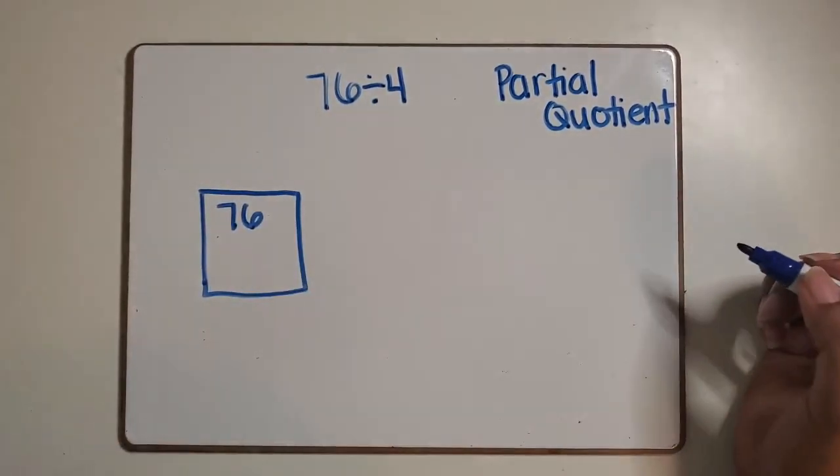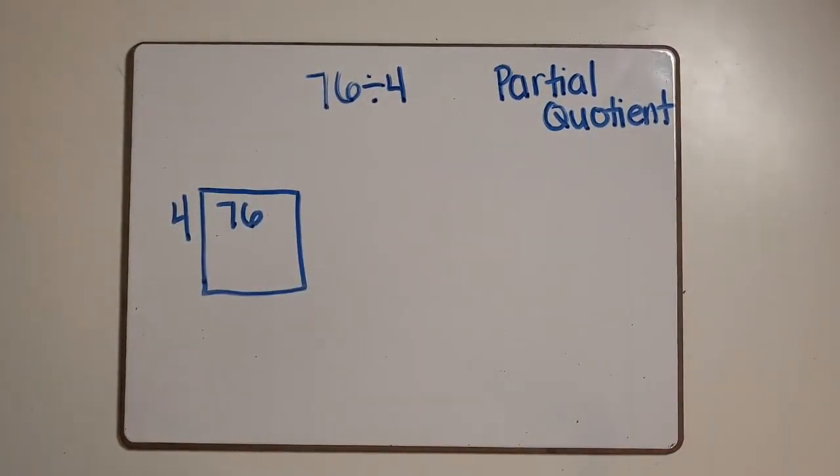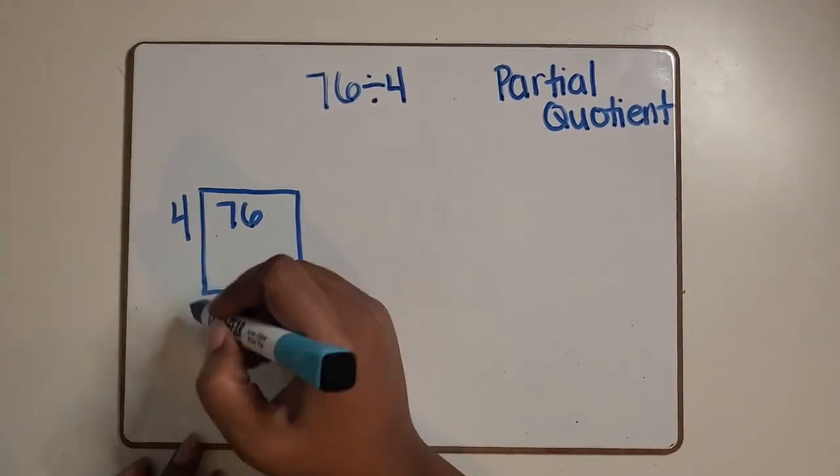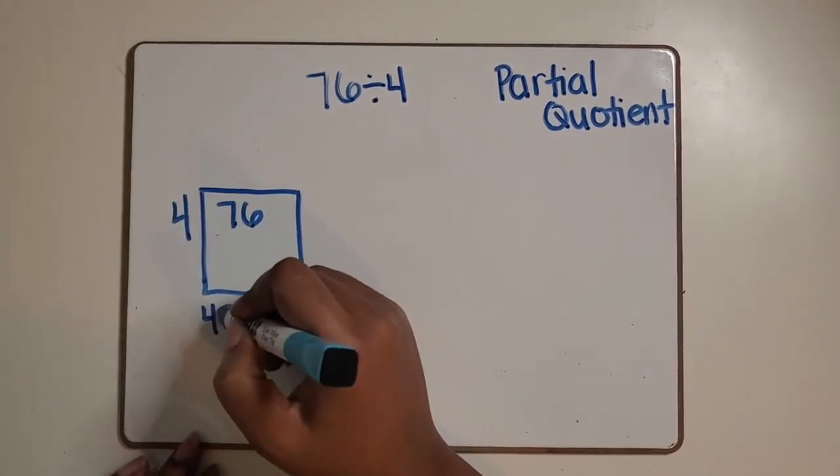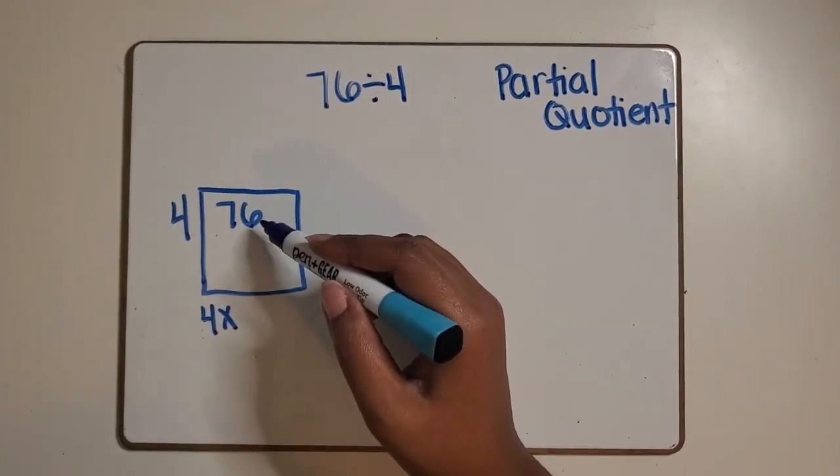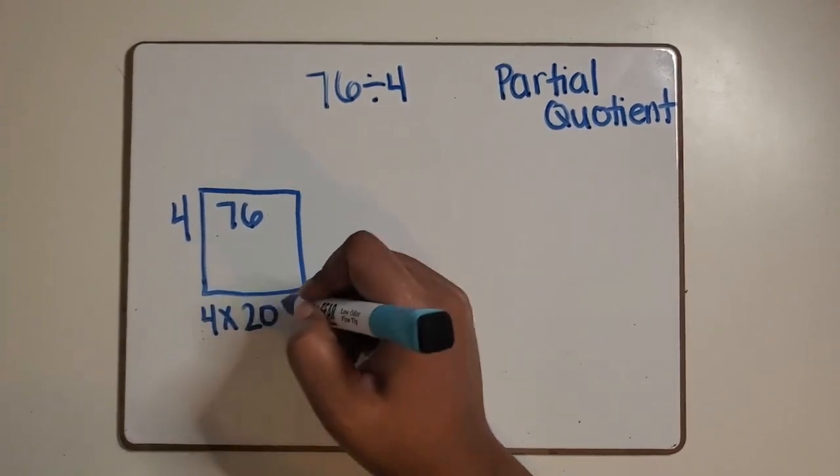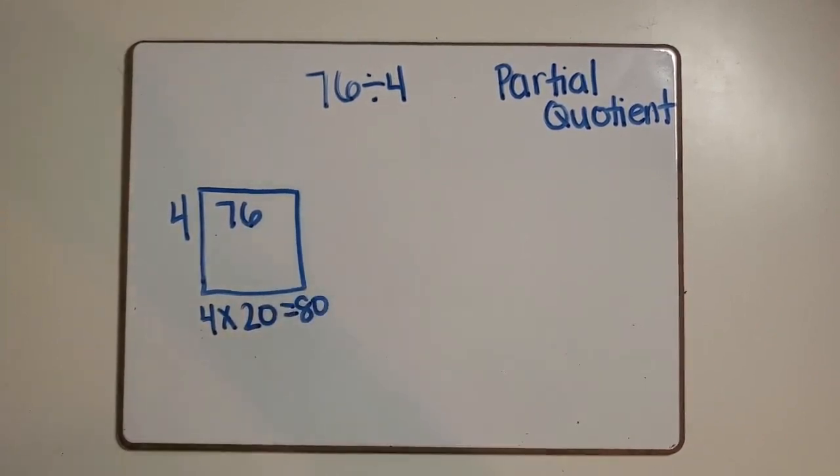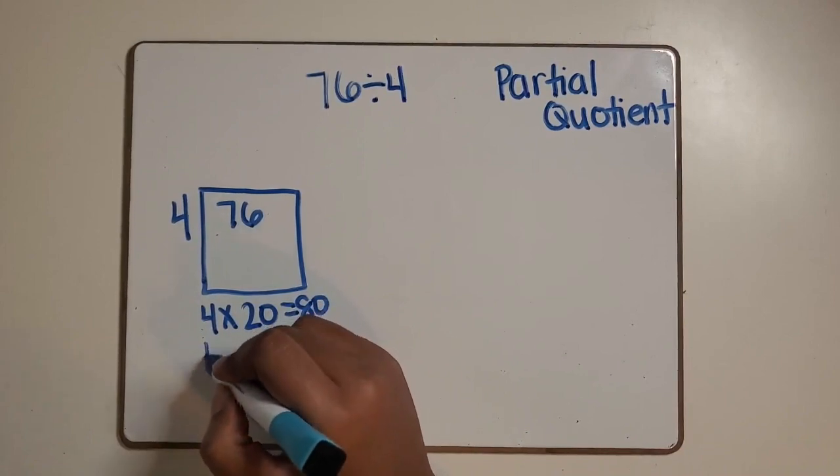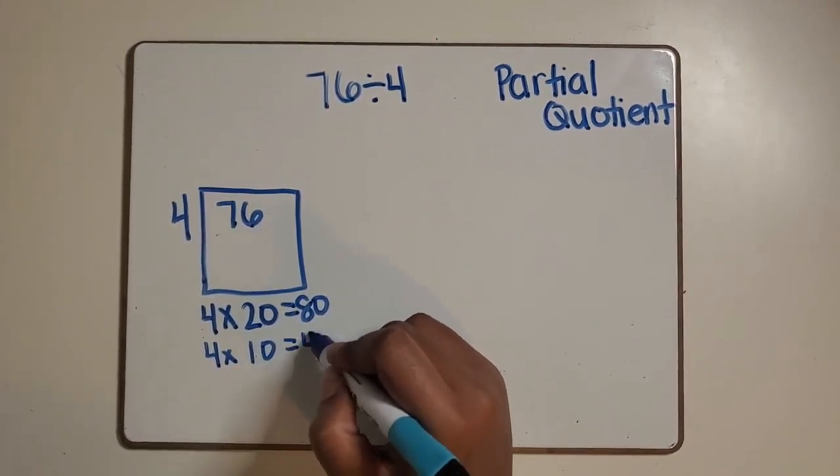What we're going to do is represent the 76 using that rectangle and we know we are sharing it among four classes. This is where multiplication facts can be very beneficial. Students can think about four groups of what number gets them close to the number 76. They may know that four groups of 20 or four times 20 is 80. They may know that four times 10 is 40.